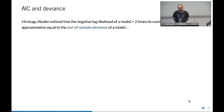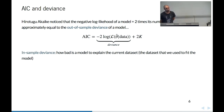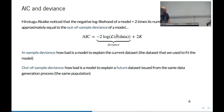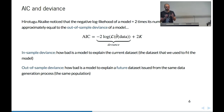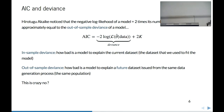What about information criteria? We know that the negative log-likelihood of a model plus two times its number of parameters is approximately equal to the out-of-sample deviance of a model. The in-sample deviance measures how bad the model is at explaining the current dataset, whereas the out-of-sample deviance measures how bad the model is at explaining a future dataset from the same population — which is arguably more interesting. We would like to build models that are good at predicting future data. The AIC gives an approximation of this out-of-sample deviance, so in simple words the AIC gives an approximation of the predictive ability — the ability of the model to predict future data. It's remarkable that we have a way to know how the model will behave in predicting future data.